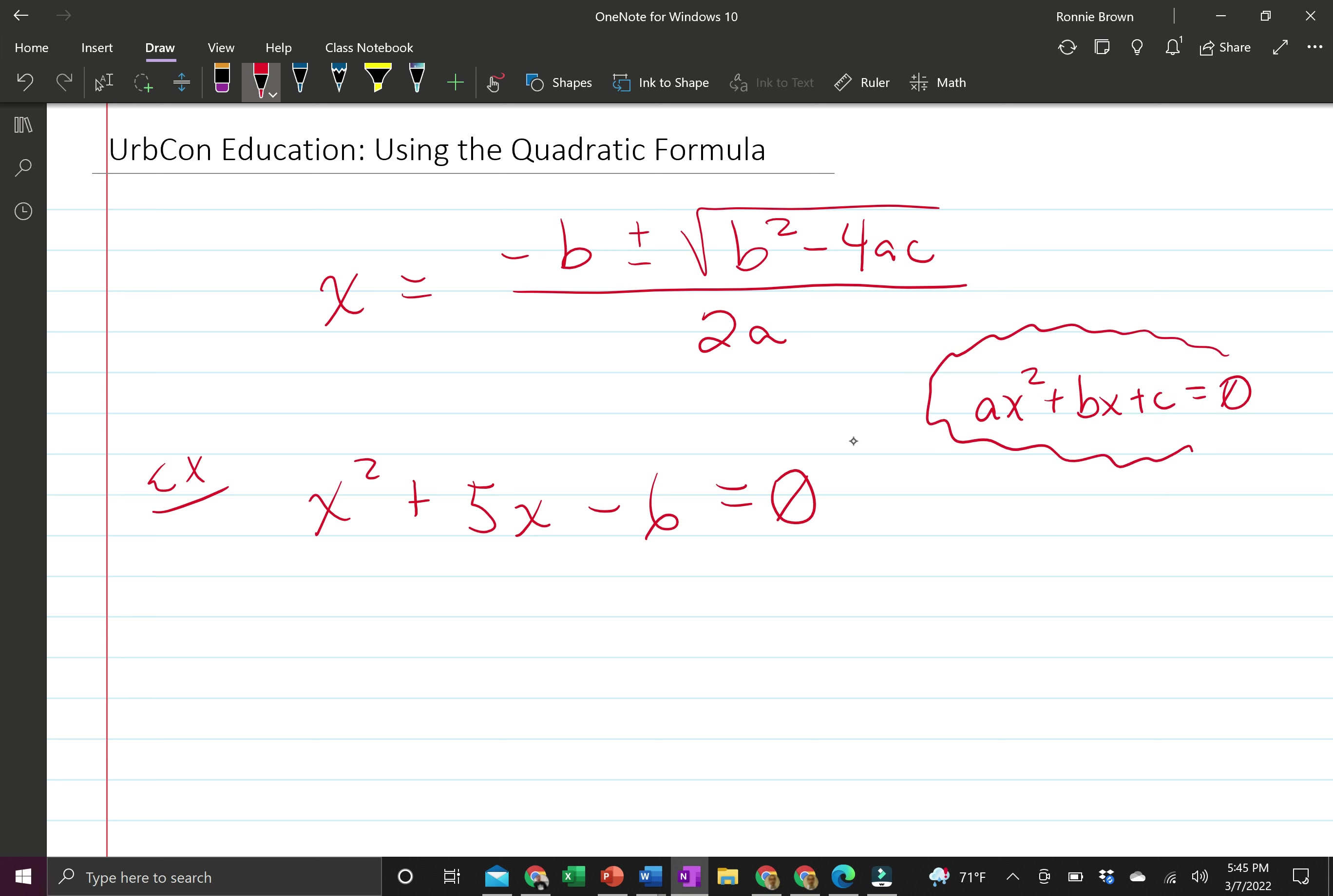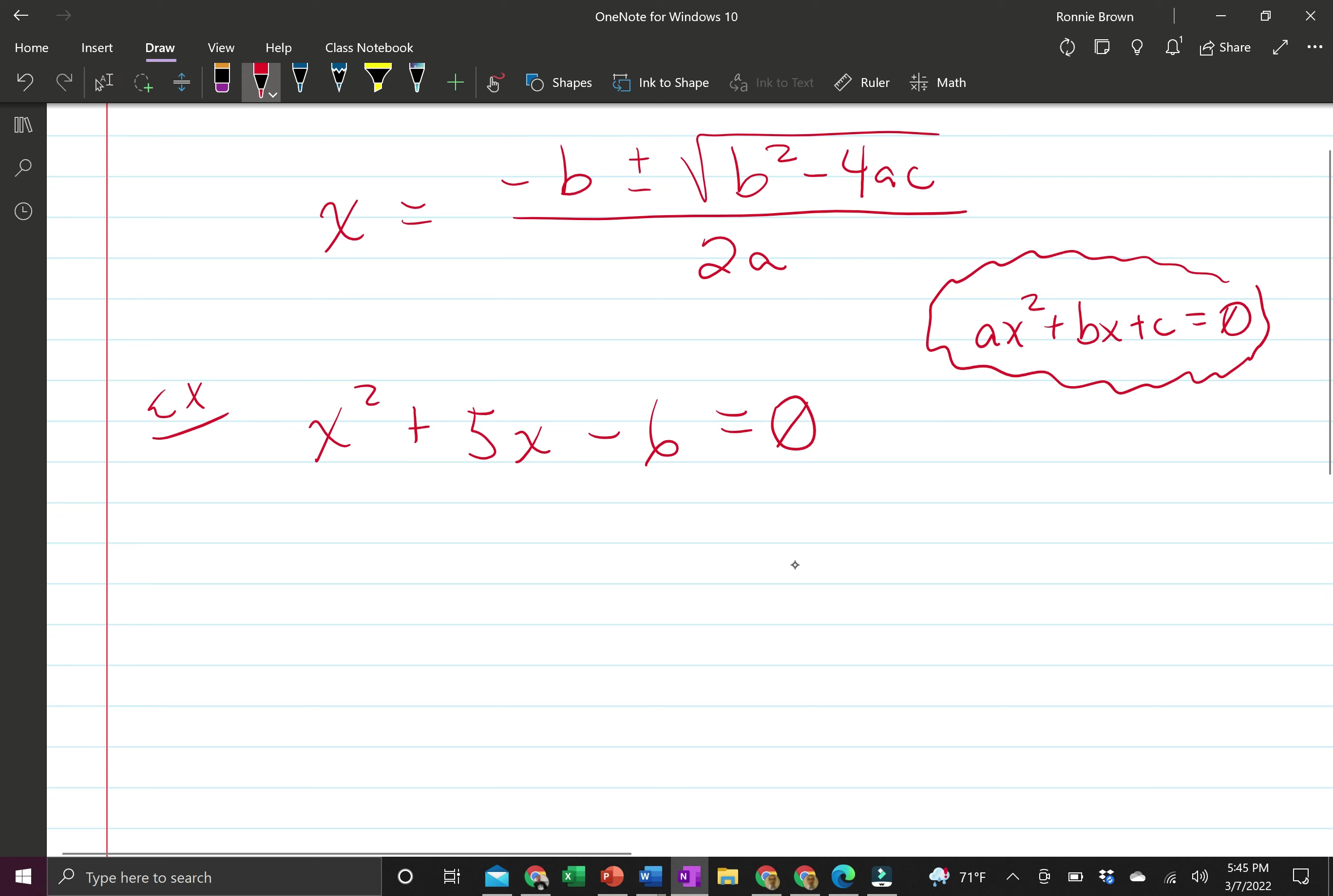Ax squared plus bx plus c equals 0. The 0 could be on the left and everything else on the right, but this is standard form. Now we identify a, b, and c based on it being in standard form. The a value is always the number in front of the squared value, b is the number in front of the x, and c is the constant by itself.